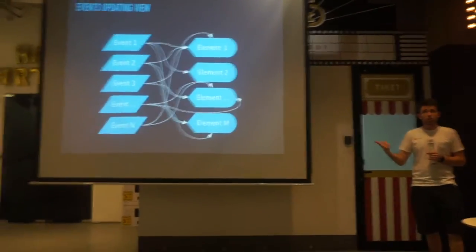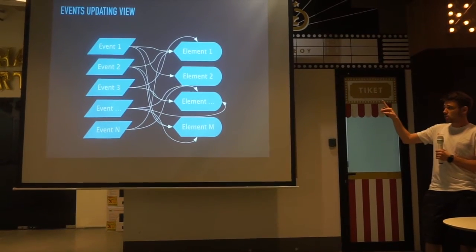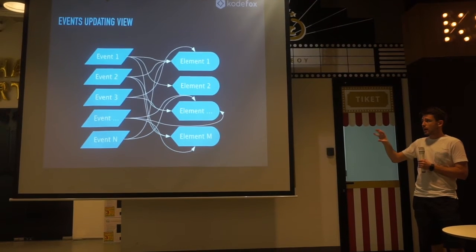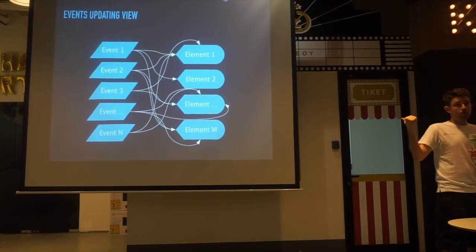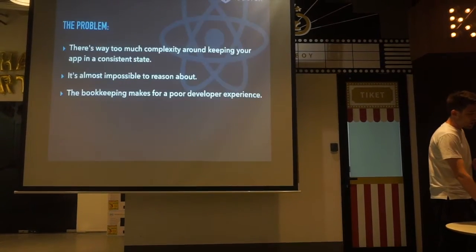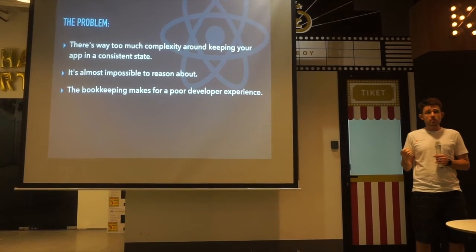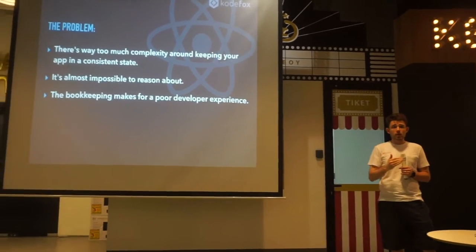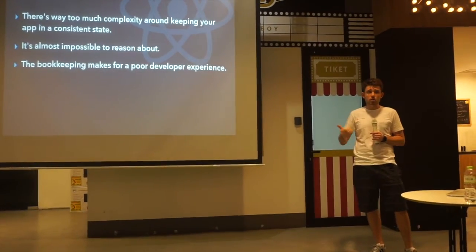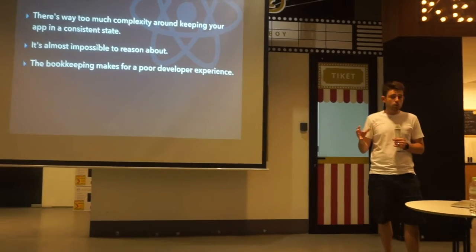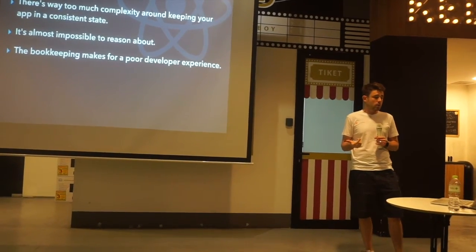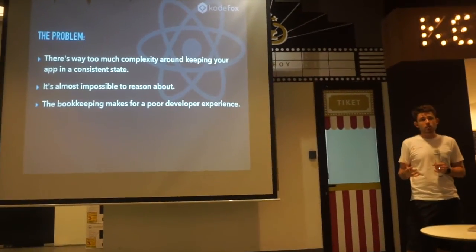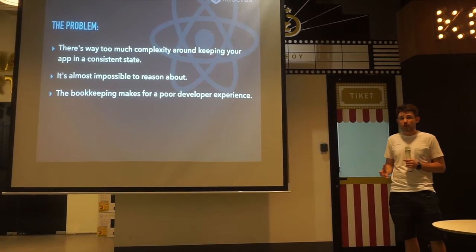We got to a situation where things were getting pretty confusing. Every event needs to change multiple elements, clicks and data coming in from the server cause us to mutate elements all over our page. That's fine for the computer, but it's difficult for us as programmers to understand what's going on. The problem: there's way too much complexity around keeping your app in a consistent state. Consistent state means if you have an unread messages counter and a message list, they need to stay in sync. Whenever you mark a message as read, it needs to update a counter somewhere else on the page. It's almost impossible to reason about things when you're reaching all over the application changing items.